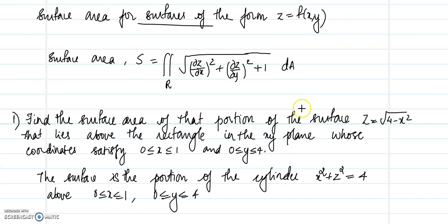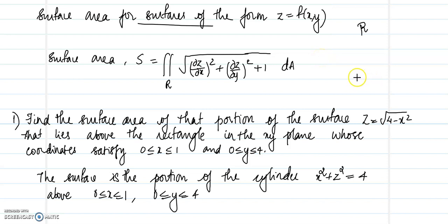In today's class, let us look at an application of double integrals for calculating the surface area of surfaces of the form z = f(x,y) over a given region R. The surface area is given by the double integral over R of the square root of (∂z/∂x)² + (∂z/∂y)² + 1 dA.